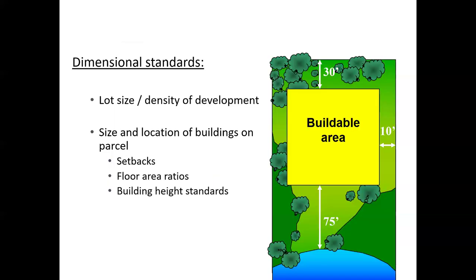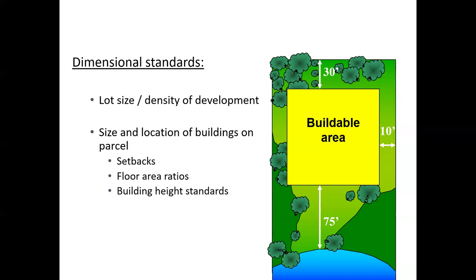Dimensional standards typically include minimum lot sizes — and could be maximum lot sizes — and then the size and location of buildings on the parcel. You can see the setback from the road, from the side yard, from the water. What's left when you apply those setbacks is the buildable area of a lot. This is very helpful to be able to see when you're deciding on variances — what area is buildable on the lot and what is not.